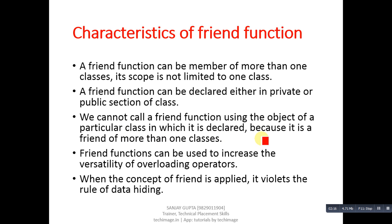We cannot call a friend function using the object of a particular class in which it is declared, because it is a friend of more than one classes. So you have to call it directly without mentioning any object. Friend functions can also be used to increase the versatility of operator overloading.